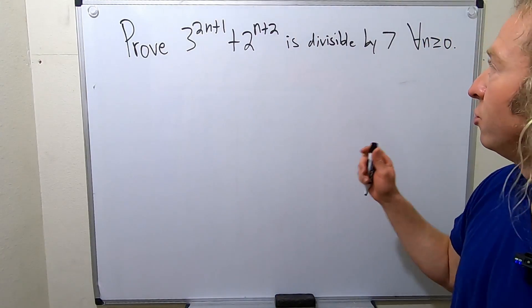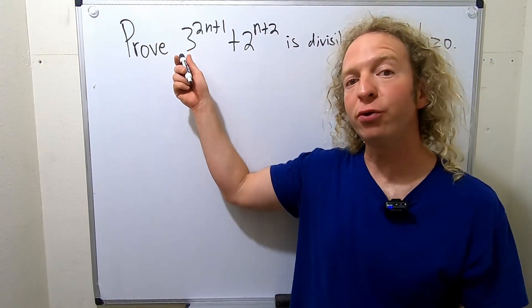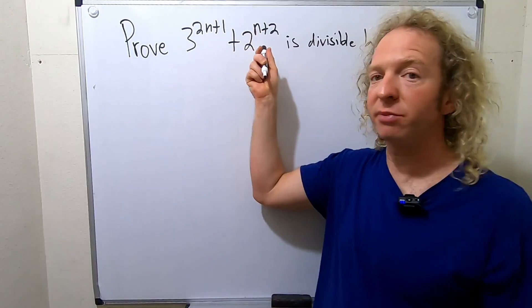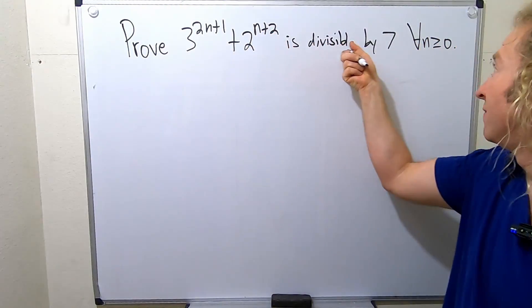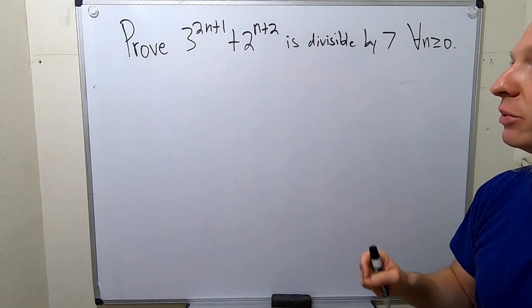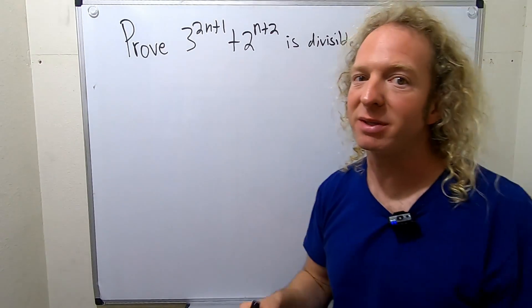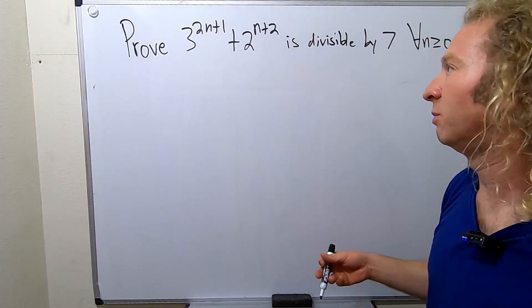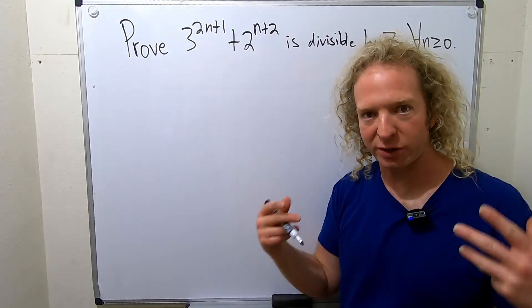Hey, what's up everyone? So in this video we're going to do an induction proof. We're going to prove that 3 to the 2n plus 1 plus 2 to the n plus 2 is divisible by 7 for all n greater than or equal to 0. I haven't really gone through this problem entirely, but I think we should be able to figure it out as we go through it, so let's try to do it.